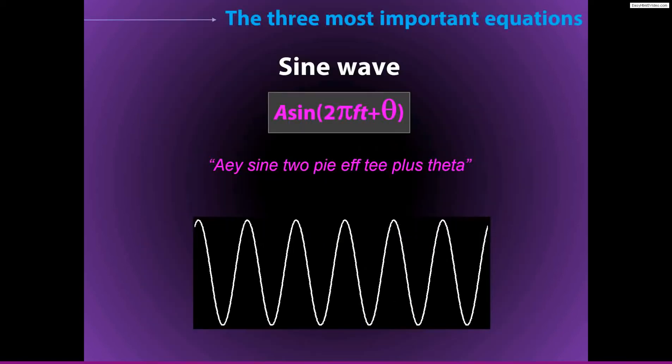The first important equation is a sine wave, and the representation is pronounced A sine 2 pi f t plus theta. I'm sure you are familiar with what a sine wave looks like. It's this rhythmic thing that goes up and down. It cycles up and down.